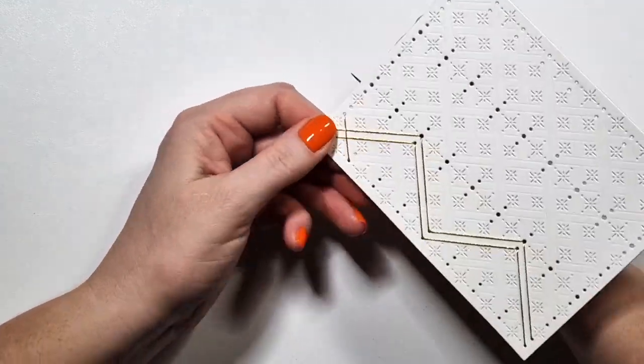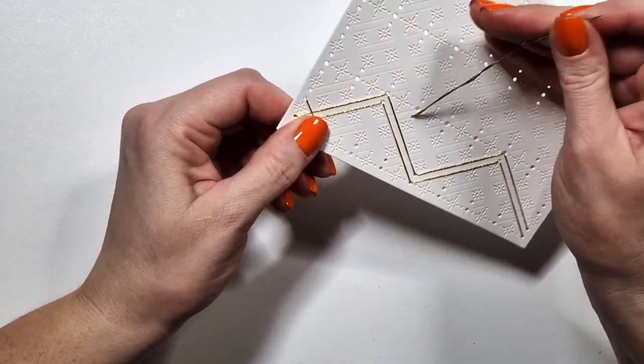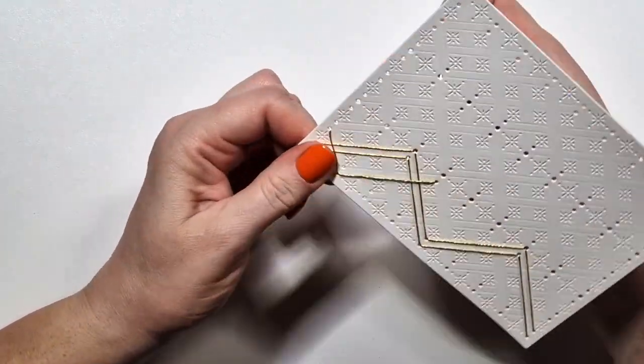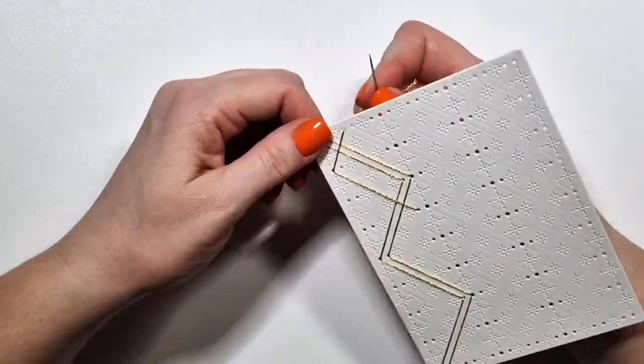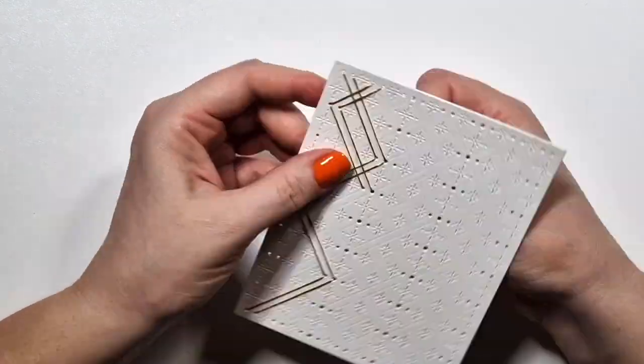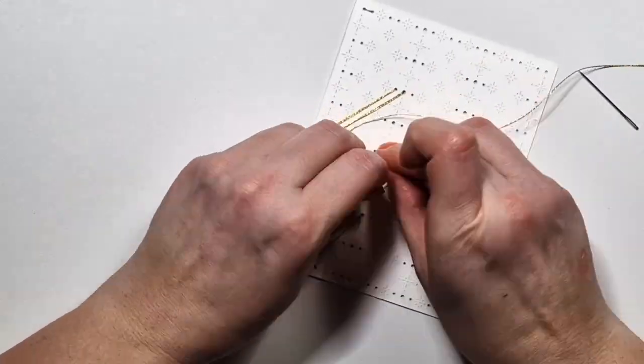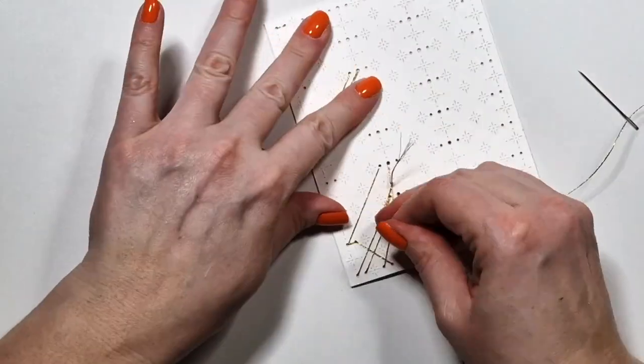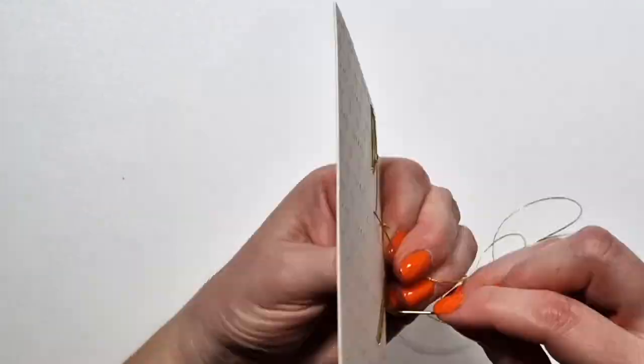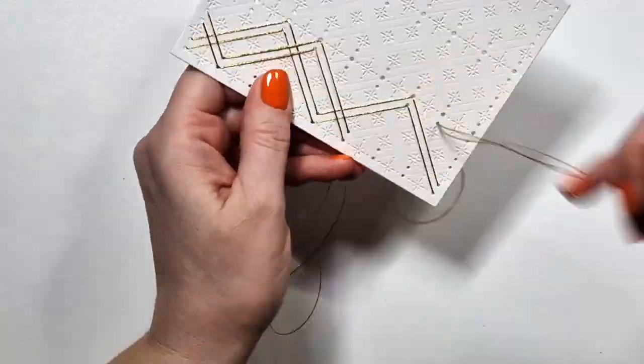Also the other thing I wanted to mention that all the stitching panels that I created, they are two layers, at least two layers of cardstock. Just so you can see that it is not bending in my hands as I'm adding the stitching. I like these panels to be sturdy. So that's why I glue together several pieces. In this case, it was two because I used Neenah solar white cardstock, the heavyweight one, I think it's 110 pounds. So two of those is good.